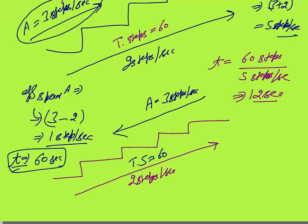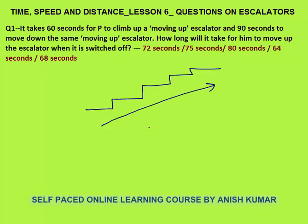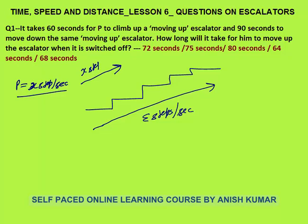With only one effective step per second going down over 60 steps, it takes 60 seconds. Now for question 1: it takes P 60 seconds to climb up a moving-up escalator. Escalator speed is E steps per second, and P's speed is X steps per second. Two situations are given — one where P is climbing up, and one where P is coming down on the moving-up escalator. In situation one, effective speed is x plus e steps per second.